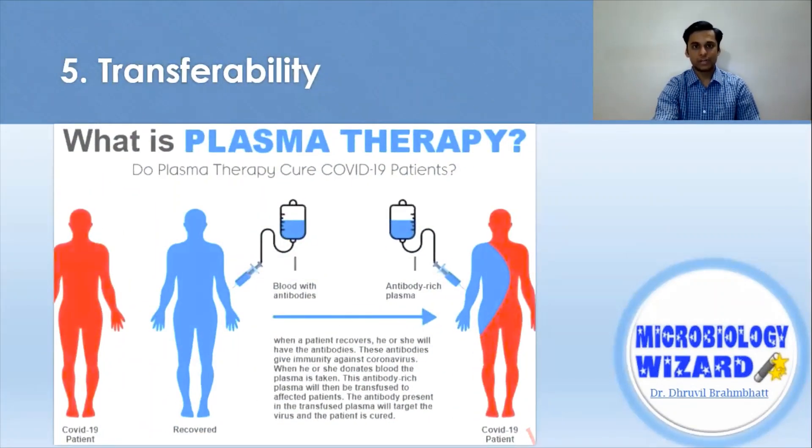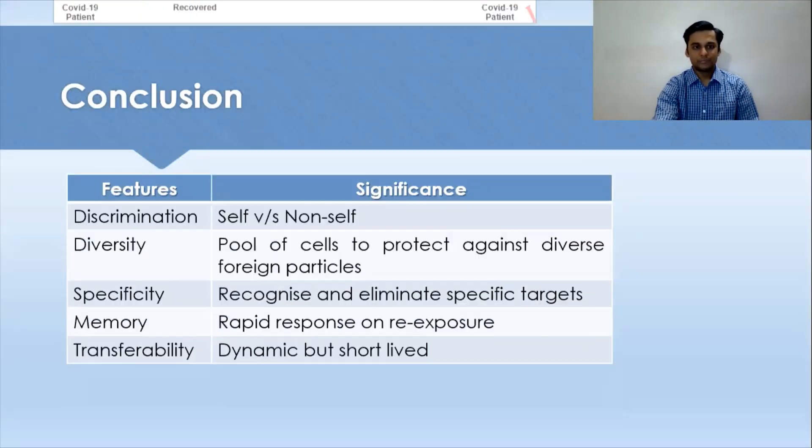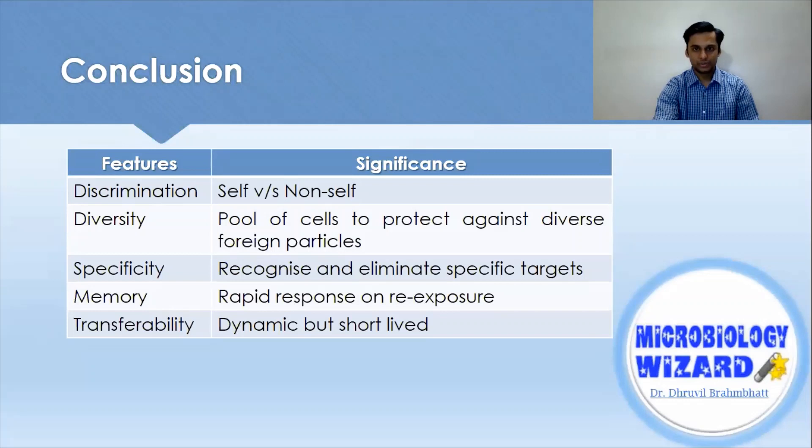Now all these are examples of the transferability feature of immune response. So here I conclude this video tutorial. I hope you might have gained the information related to specific immune response and its features. The characteristic features of immune response are discrimination, diversity, specificity, and memory, along with transferability, which makes all of us strong and resistant against most of the pathogens.